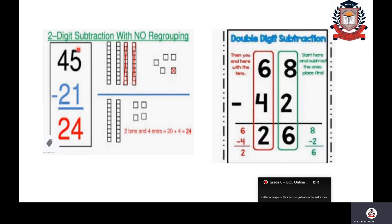Here are the number blocks representing 45. Four tens blocks make 40 and five ones blocks make 5. Now out of five ones, I am taking away one. Four ones are left over. Then coming to tens place: four minus two. Out of four tens I am taking away two tens, leaving two tens.